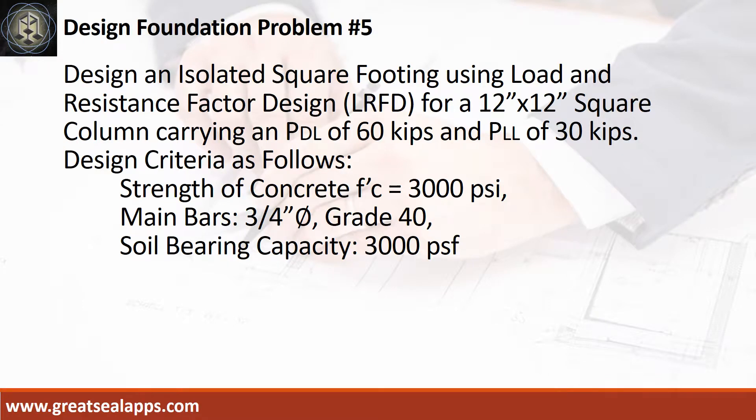Design an isolated square footing using load and resistance factor design for a 12 inches by 12 inches square column carrying an axial dead load of 60 kips and axial live load of 30 kips. Design criteria as follows: Strength of concrete, 3000 psi. Main bars, 3/4 inch diameter, grade 40. Soil bearing capacity, 3000 PSF.